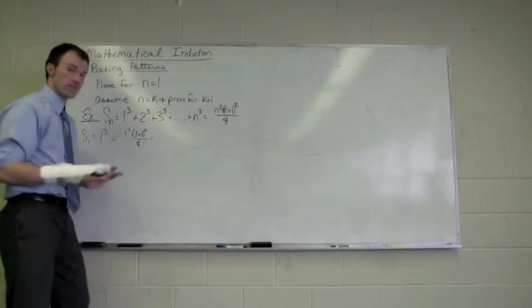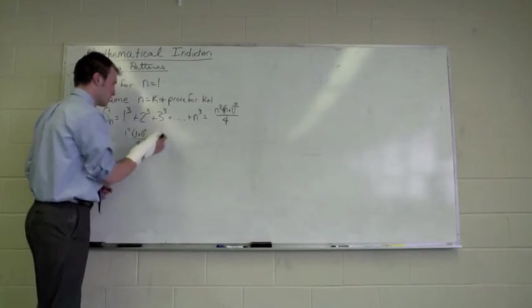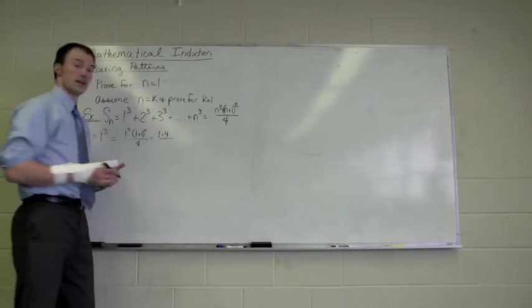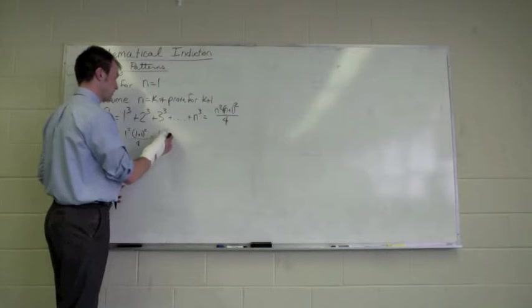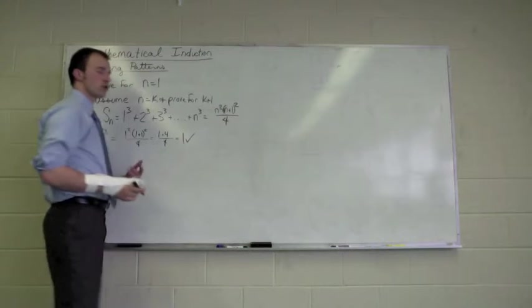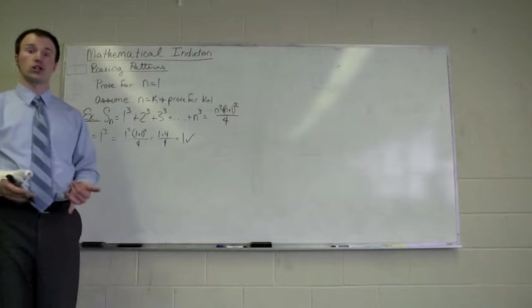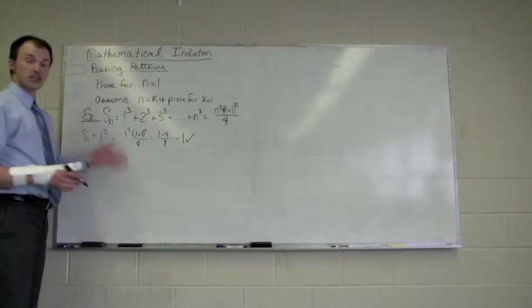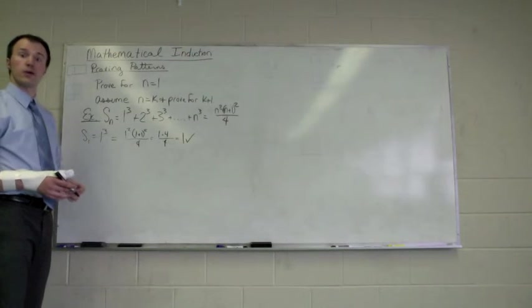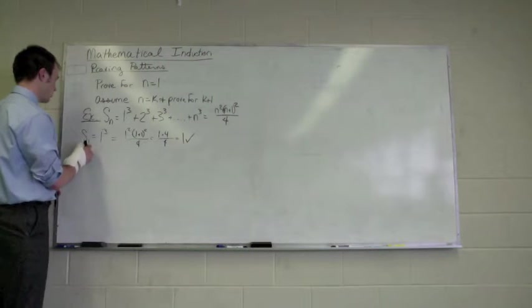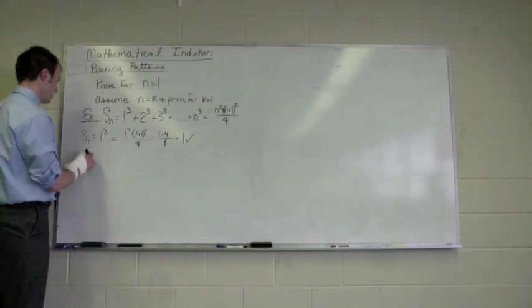So 1 squared times 1 plus 1 is 2 squared, which gives us 4, and we're going to divide the whole thing by 4. And 4 divided by 4 equals 1. So it works for when n equals 1. That's important, because if it doesn't work here, then it might not work anywhere else. But because it works here, we're now going to do the sum of k plus 1.